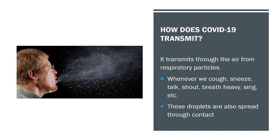COVID-19 transmits through the air from respiratory particles. Whenever we cough, sneeze, talk, shout, breathe heavily, or sing, these droplets are spread through the air. If you are two meters away when someone coughs, there is a very good chance the droplets will not reach you. These droplets are also spread through contact — when someone coughs, respiratory particles land on a surface like a table; the next person touches it and now it's on their hands.